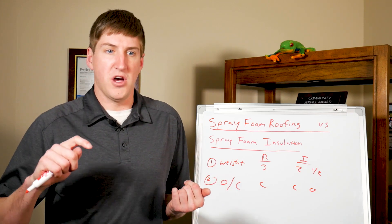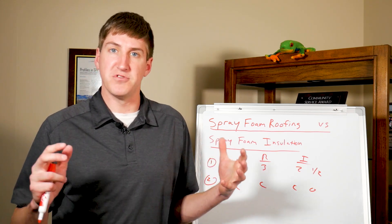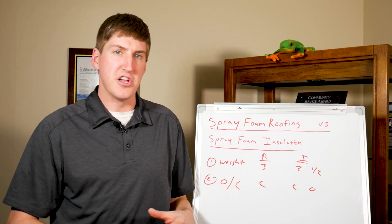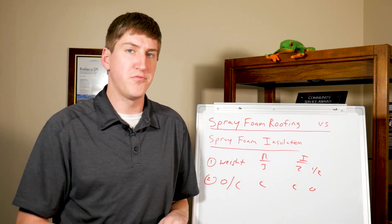So closed cell traps the gases inside which creates the heat. It doesn't let the heat go through. Open cell traps air to create its R value. So a little bit of difference there.